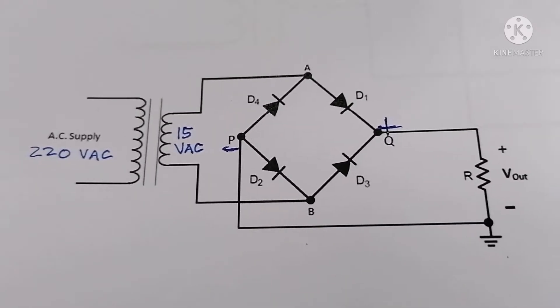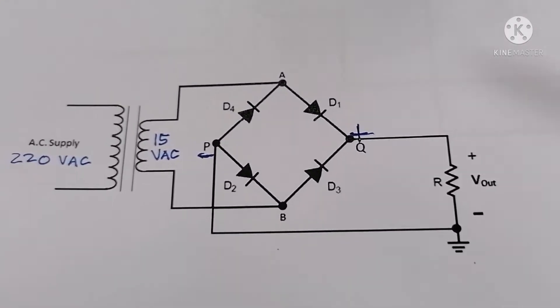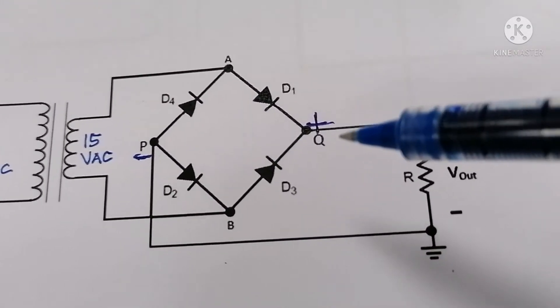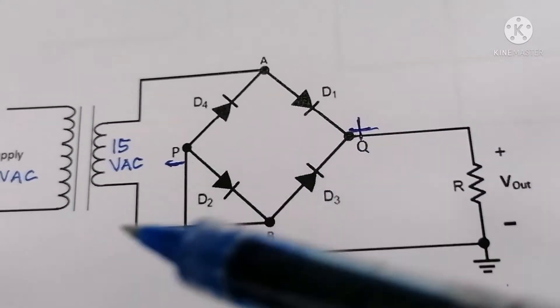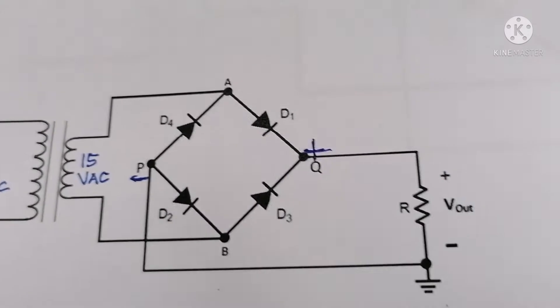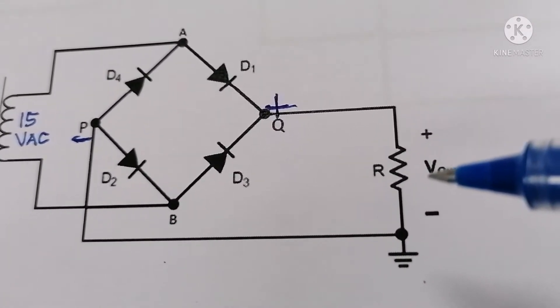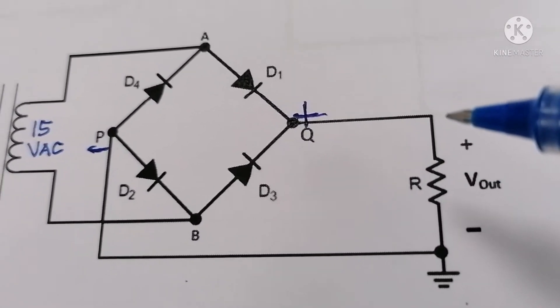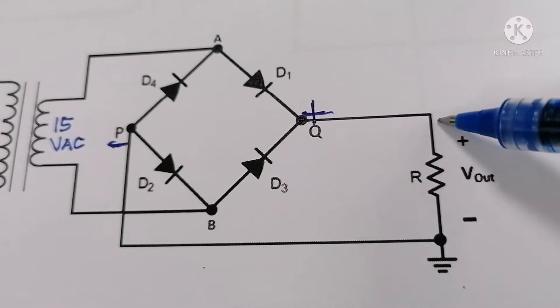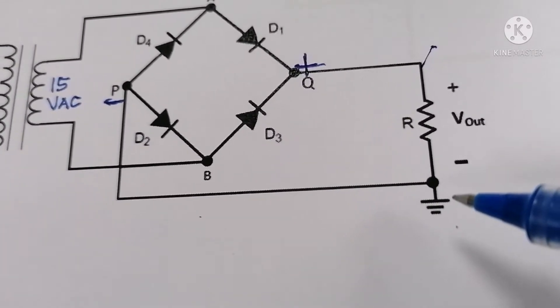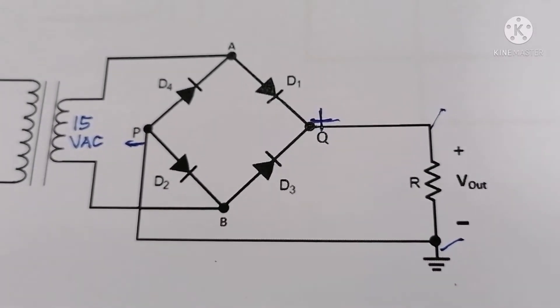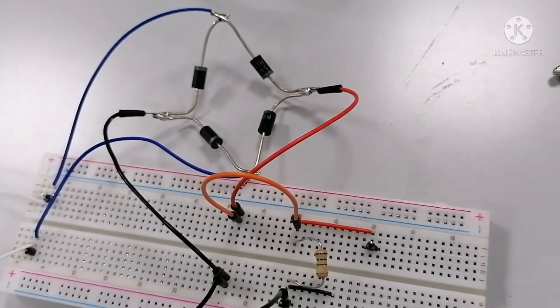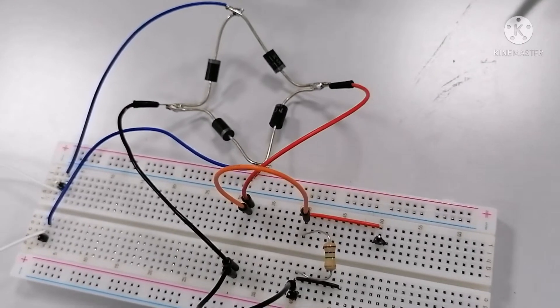And now we will proceed to the examination of the output of the rectifier. We will go back to the diagram. So we will proceed to the examination of this point plus and minus. I put some load resistor here. I will connect the oscilloscope to this point and this point and you will see the actual waveform.